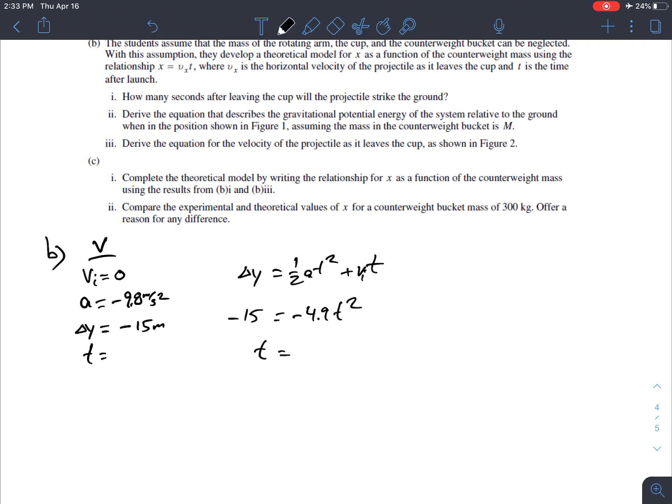So let's see what we get there when we find the square root of 15 divided by 4.9, and that's about 1.75 seconds.